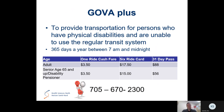There's also Handy Transit — Gova Plus — which provides transportation for persons who have physical disabilities and are unable to use the regular transit system. They have a lift at the back of the bus for accessible door-to-door service. It runs 365 days a year between 7am and midnight. If you have any questions, you can contact them at 705-670-2300.